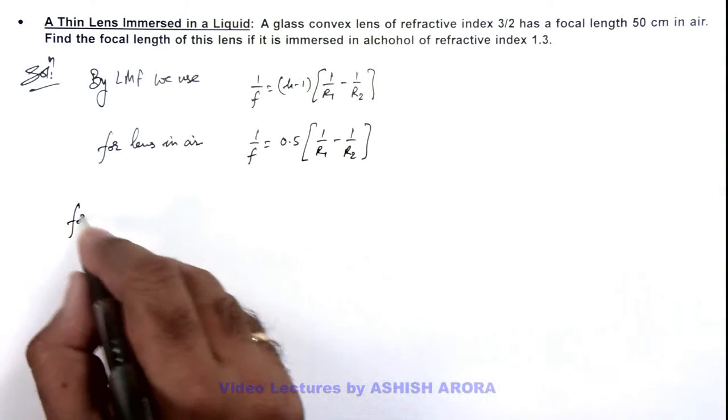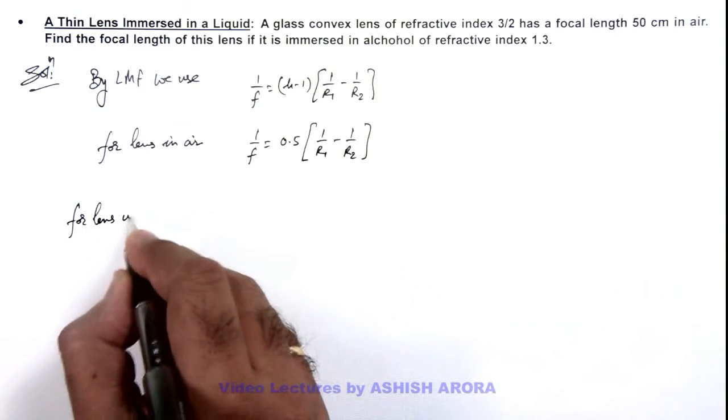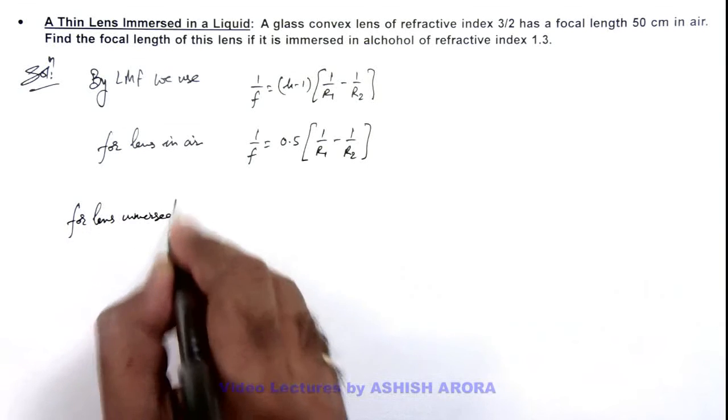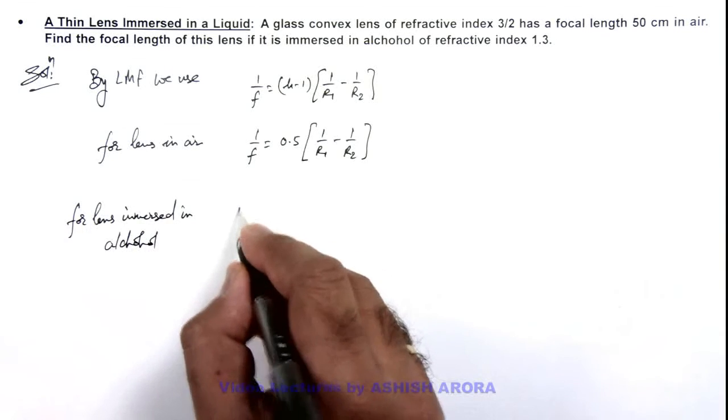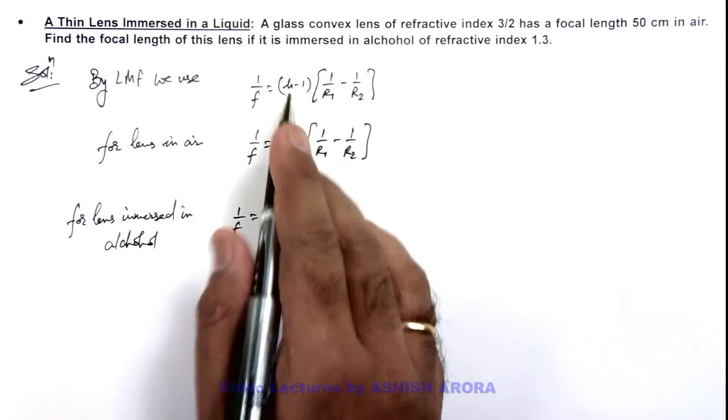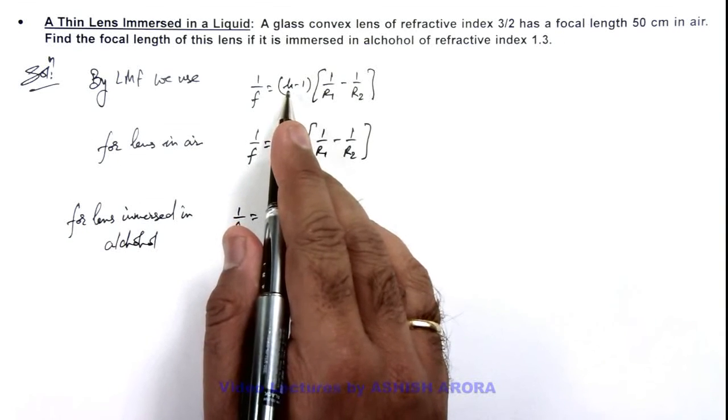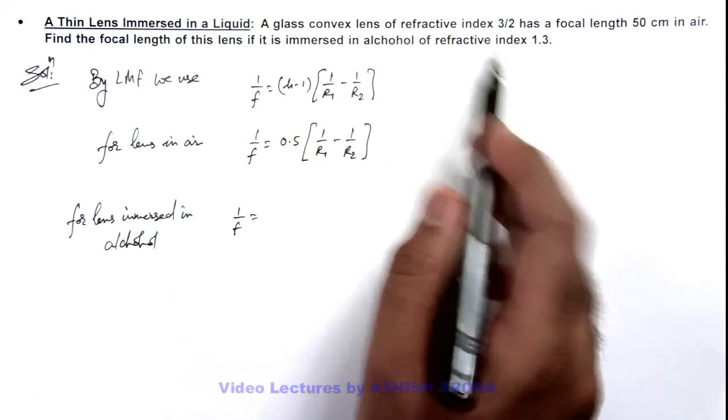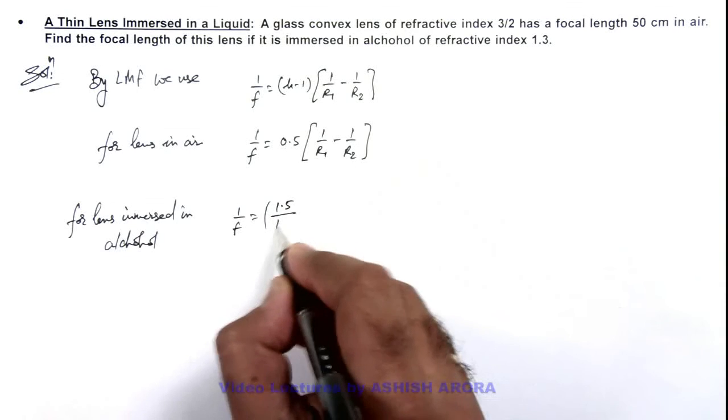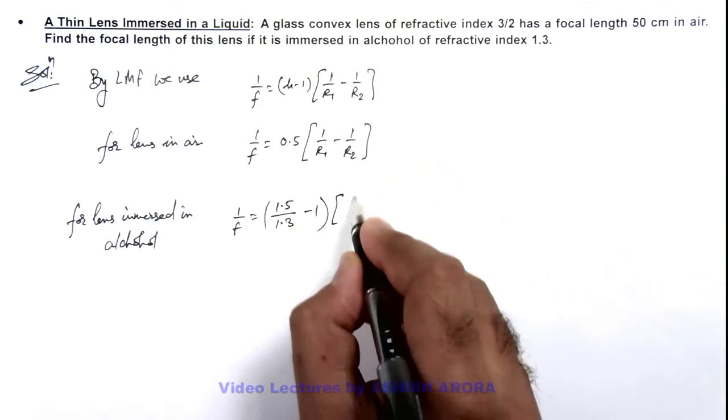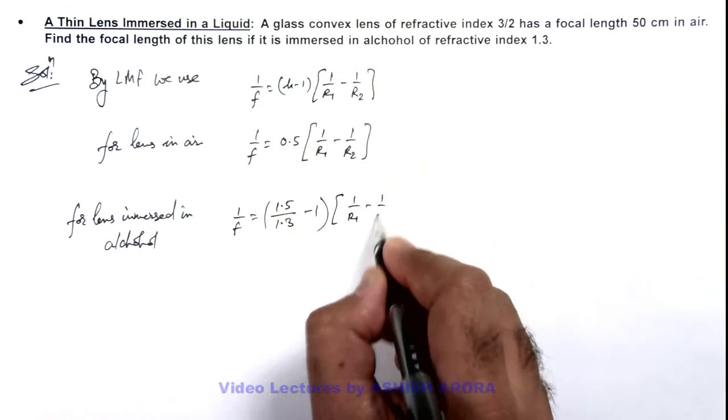And for lens immersed in alcohol, we can use 1/f' where the value of μ we can take as that of glass with respect to alcohol, so this will be taken as 1.5/1.3 - 1, times (1/r₁ - 1/r₂). This can be written as 0.154 times (1/r₁ - 1/r₂).